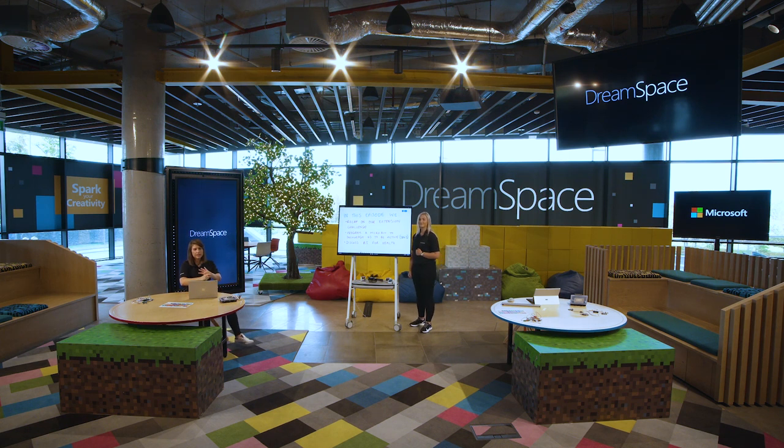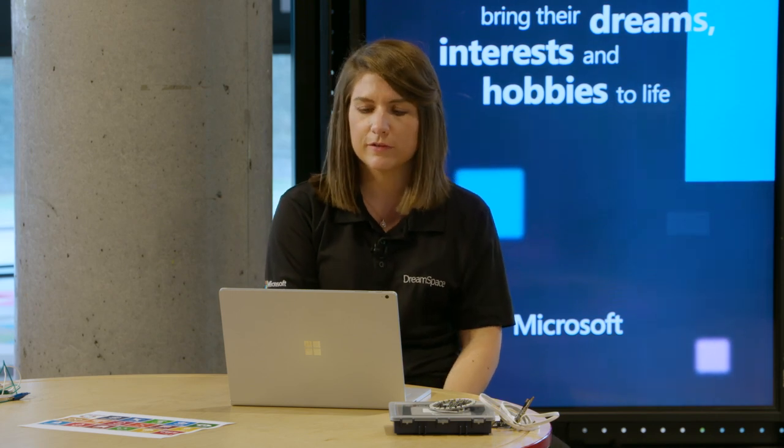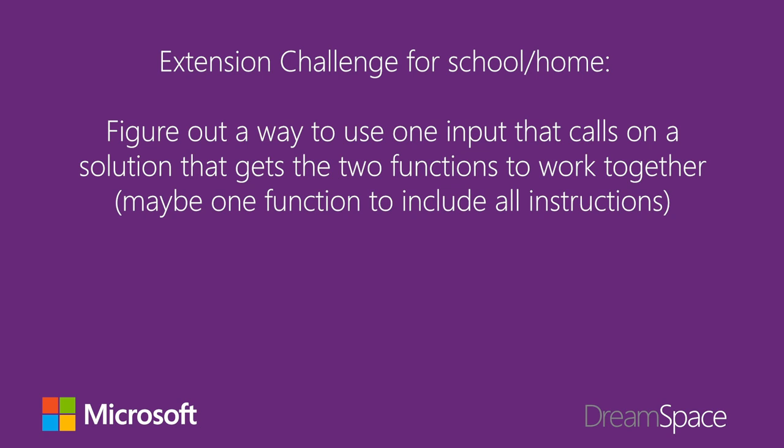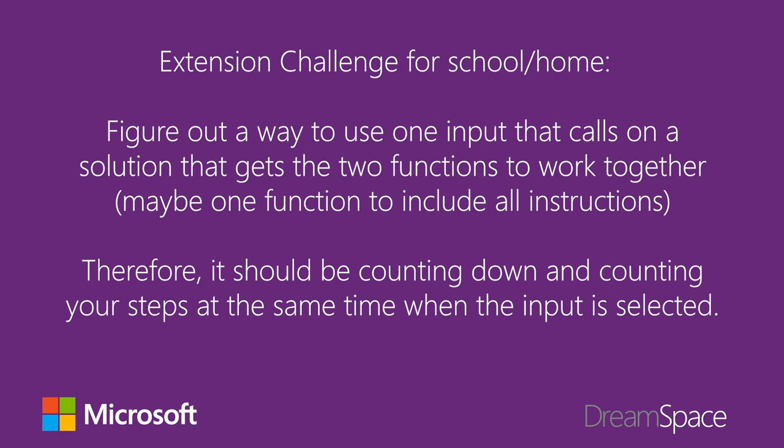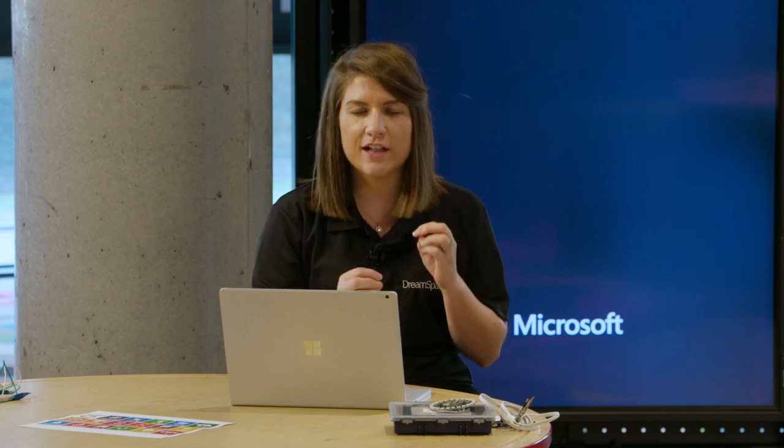Lots covered again. We haven't forgotten — there is an extension challenge, and this one might be a little tricky so don't give up or be deflated if you find it hard. The challenge: combine the two functions we've made — the step counter and the countdown timer — so that on one input (for example, button A), it both begins the countdown and counts your steps simultaneously. You may need conditional statements and careful attention to sequence and order. Give it a shot — if you can't get it to work, we'll go through the solution in the next episode. Join us then — bye!